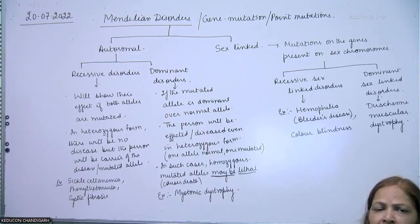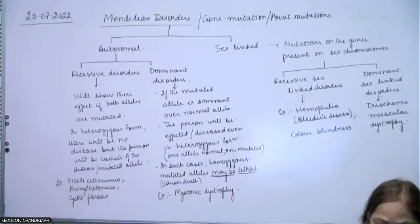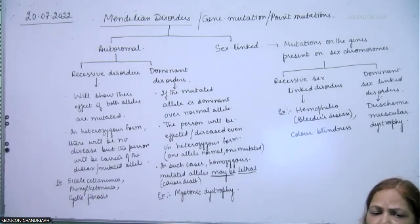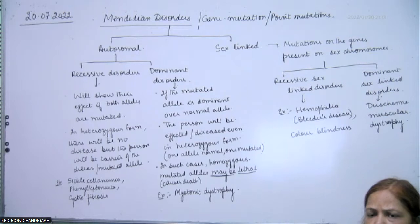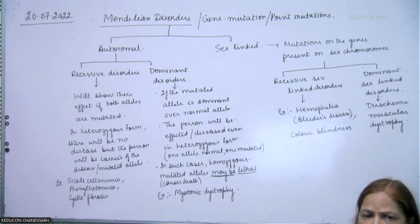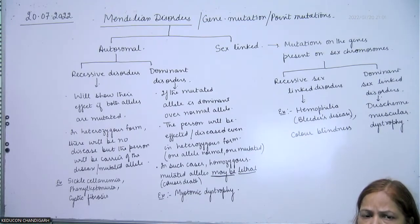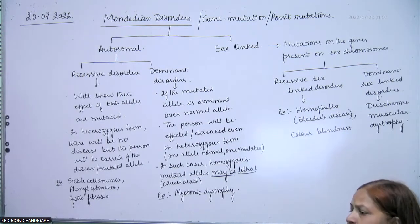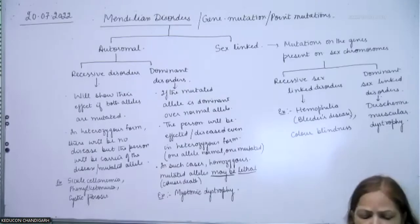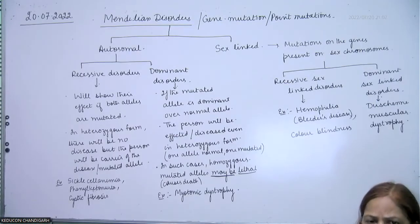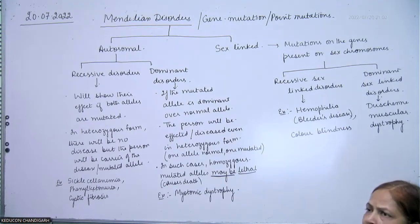First is phenylketonuria. It is an autosomal recessive inborn genetic error of metabolism. The disease will occur in the offspring if both parents are at least carriers.